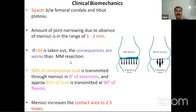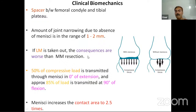Now, clinical biomechanics. The menisci function basically as a spacer between the femoral condyle and the tibial plateau. If the menisci are removed, joint narrowing of around 1 to 2 mm occurs. Removal of the lateral meniscus has worse consequences than the medial. During extension at 0 degrees, about 50% of the compressive load is transmitted through the menisci, increasing to around 85% at 90 degrees of flexion. The menisci increase the contact area to around 2.5 times.